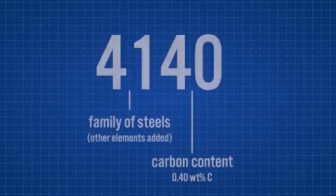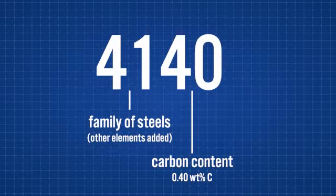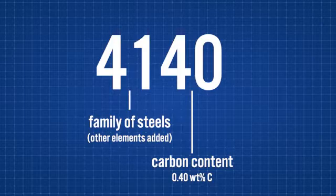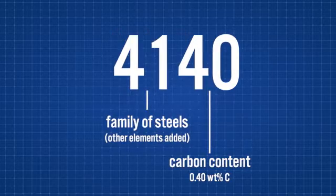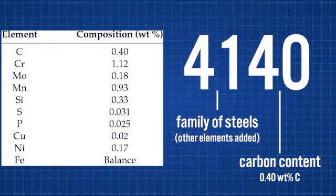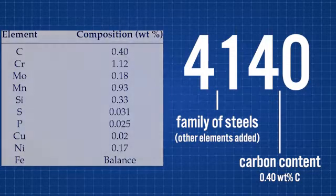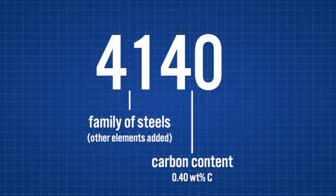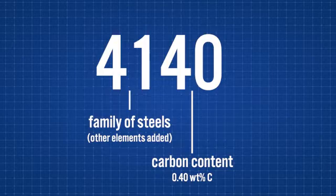Let's see how we can know the amount of carbon in steel. As you can see, we have four numbers that make up the name of the steel. The first two digits correspond to the family of steels, which tells us what other elements are included in the alloy. The second pair of digits tells you the carbon content by weight percent present. For example, steel 4140 has 0.40 weight percent of carbon in the iron.